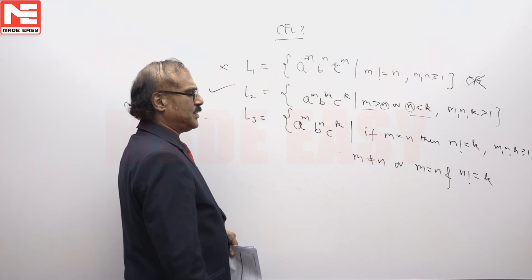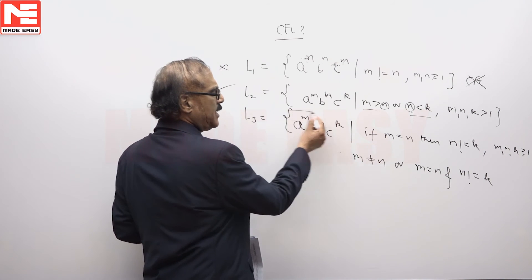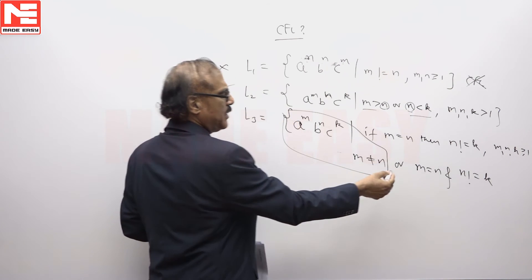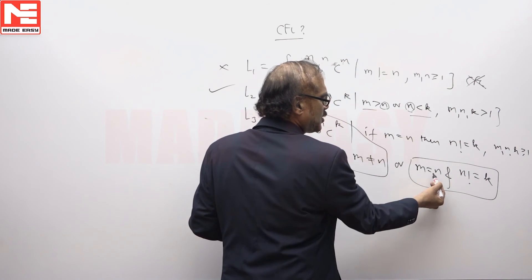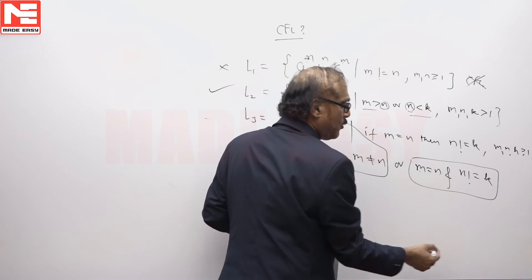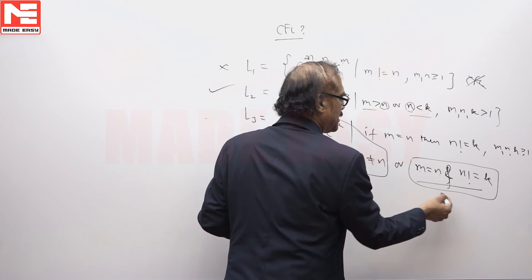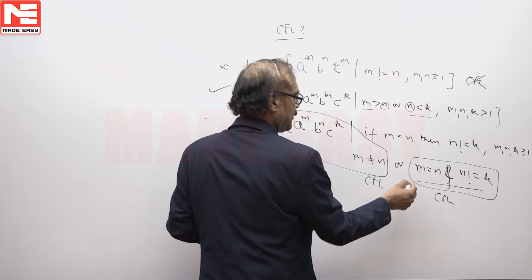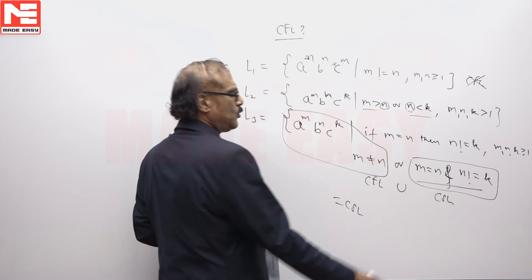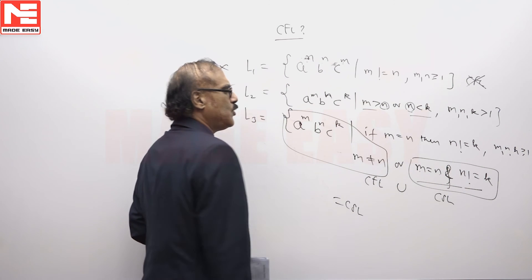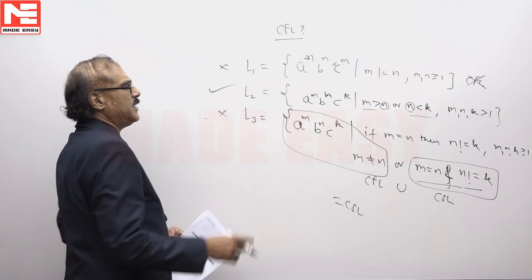So this thing is a union of 2 languages. The first language a^m b^n c^k, m not equal to n, that is of course a CFL, union with same thing again m and k. Here we have double comparison on n, that is n should be equal to m and n should not be equal to k, it is AND. This double comparison, this part is a CSL, this part is a CFL, and because of this double comparison CSL and CFL is actually a CSL. To do this double comparison you will need a LBA, PDA cannot do this. This is not a CFL.